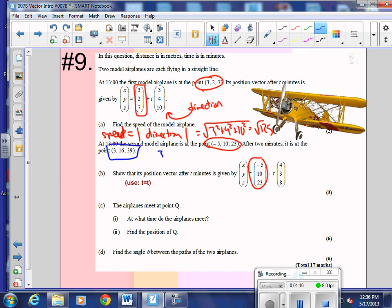We'll just take 3 minus negative 5, take 16 minus 10, and then take 39 minus 23. When I do that, I get 8, 6, 16. That's not 4, 3, 8. Why do you divide by 2? Very good, Julie. Two minutes. It took two minutes, so if you divide by 2 here, you're going to get their direction vector, 4, 3, 8. So that's how they get that.